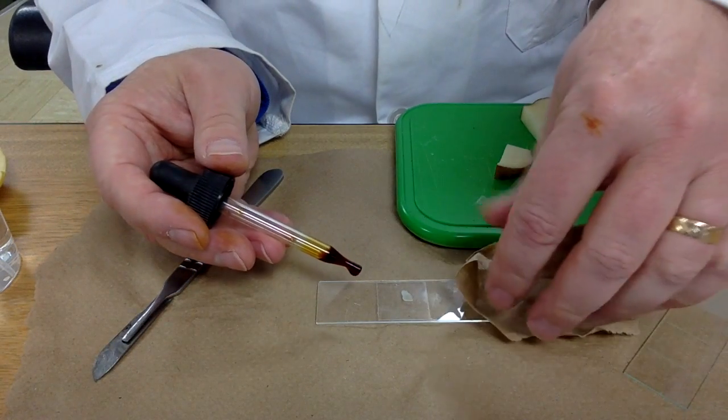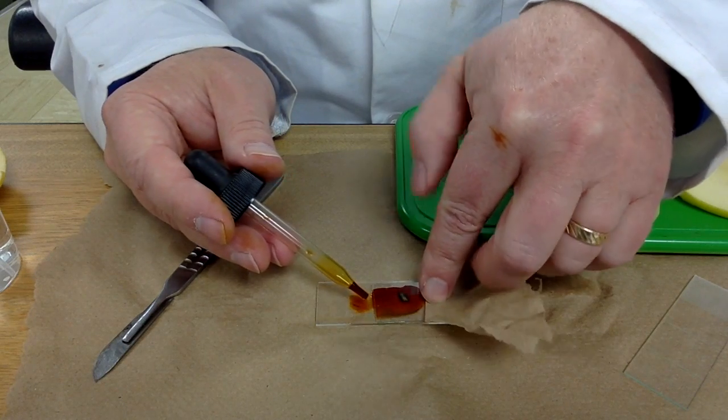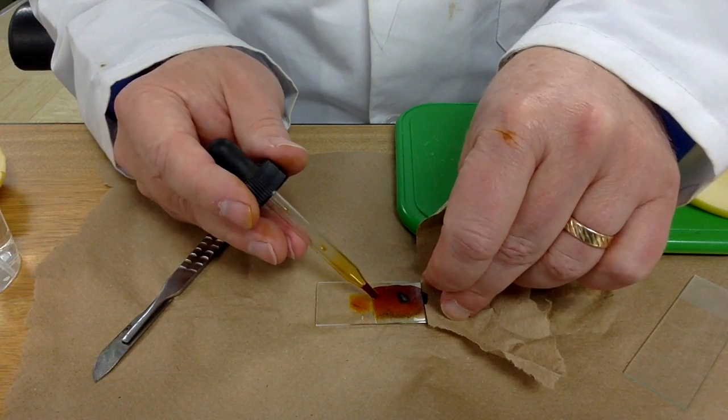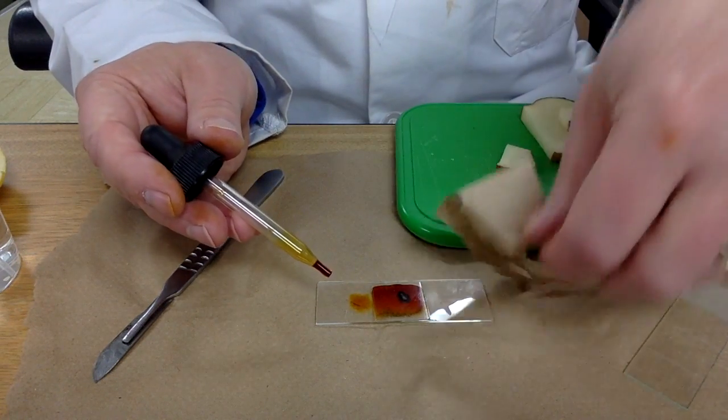While you put a drop to one side of the slide, you can hold the paper towel on the other side. That will help draw some liquid through and thoroughly stain your specimen.